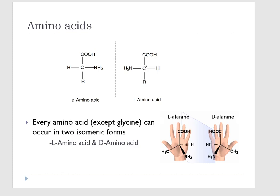Let's learn about the stereochemistry of amino acids. Every amino acid except glycine can occur in two isomeric forms, because of the possibility of forming two different stereoisomers around the central carbon atom. This means there are mirror images of their structure — just like how we have left hands and right hands. That's why they are labeled L-alanine (left-handed) and D-alanine (right-handed) to distinguish the mirror images.